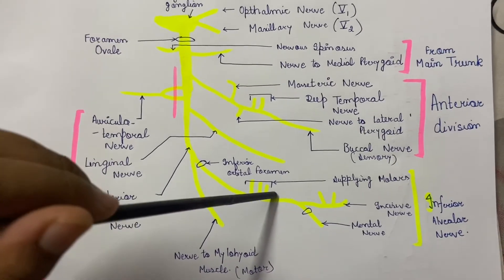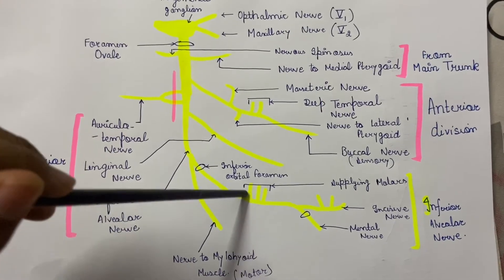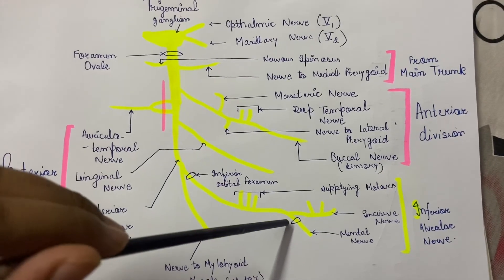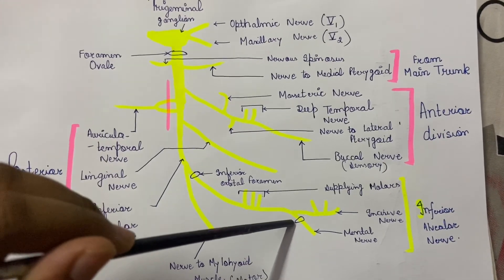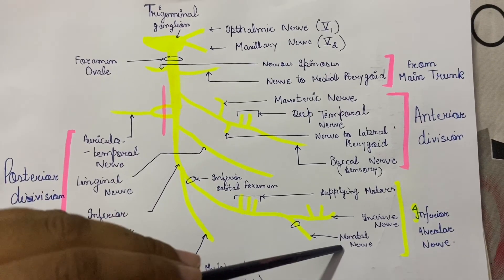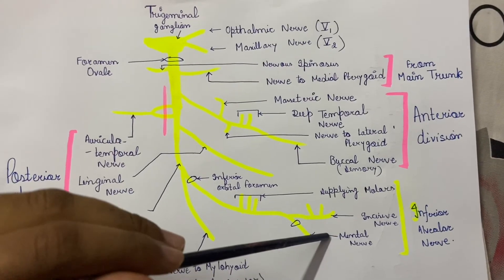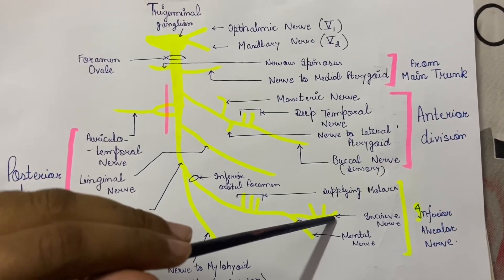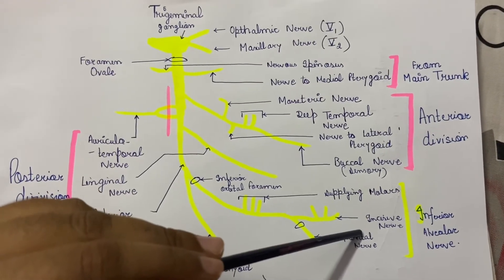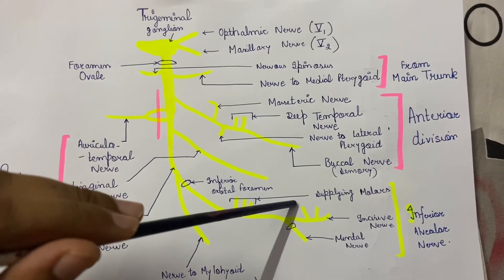This inferior alveolar nerve, its main trunk, supplies your posterior molars and premolars of your mandible. When the mental foramen comes, a branch comes out which is the mental nerve, which supplies the skin of the cheek and chin of that area. Whereas the nerve which goes straight in this canal is the incisive nerve, which supplies the incisors and canines of your mandible.